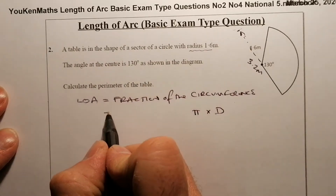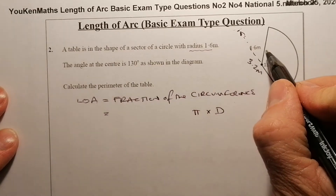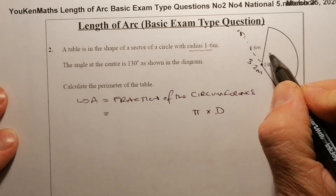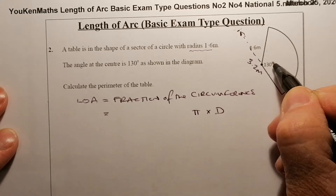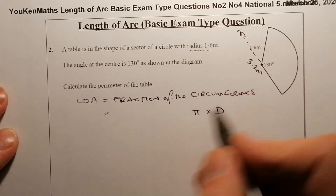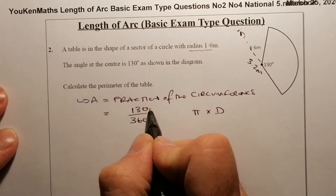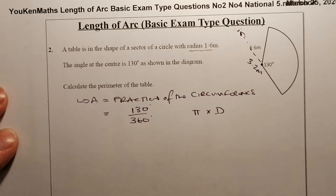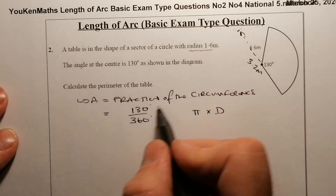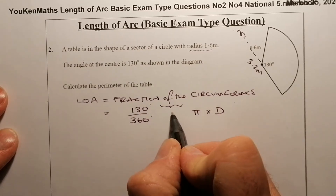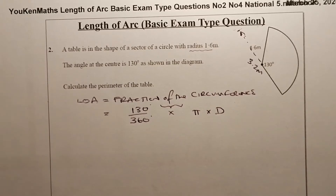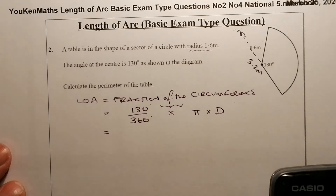The fraction we're going to work with is based on the angle of 130 degrees. So the fraction is 130 over a full turn of 360 degrees — 130 over 360 — and we'll multiply that by the circumference. That's the formula I'm going to use to work this question out, and it's a calculator question so we'll go ahead and put it in.